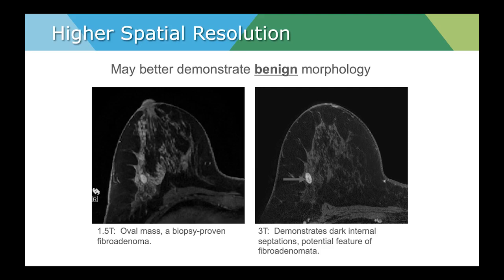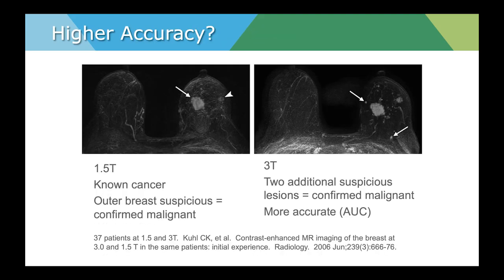Improved resolution at 3T might allow us to simply call a fibroadenoma benign rather than recommend a targeted ultrasound. There may also be improvement in visualization of multifocal or multicentric disease. In one patient imaged on both 1.5 and 3 Tesla with a known cancer, the 1.5T showed the known mass in the lateral breast confirmed malignant. However, at 3T, multiple additional satellite lesions were identified that were also sites of malignancy, overall leading to a more accurate delineation of the extent of disease.